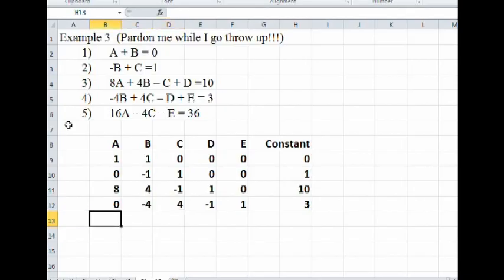Finally, we have 16. B is not there. C is negative 4. D is not there, so that's 0. And E is negative 1. And the constant term here is 36.